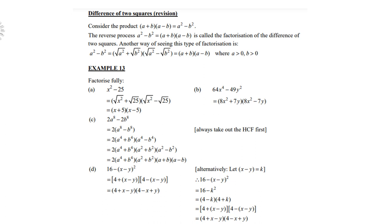Look at B: 64x⁴ - 49y². Is it a square? Yes, it is 8x² times 8x². 49y² - is it a square? Yes, 7y times 7y. So that's how you must always recognize, and there must be a minus in the middle. So don't forget.